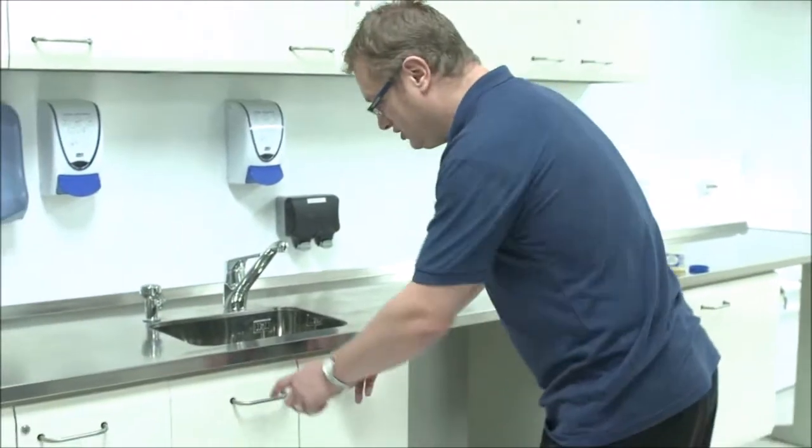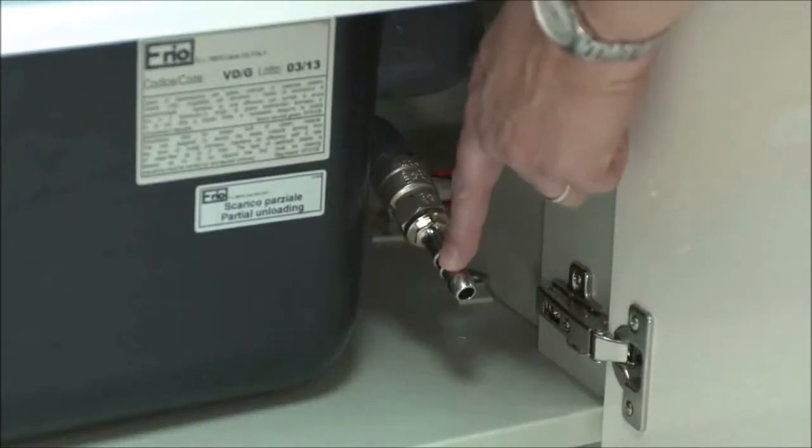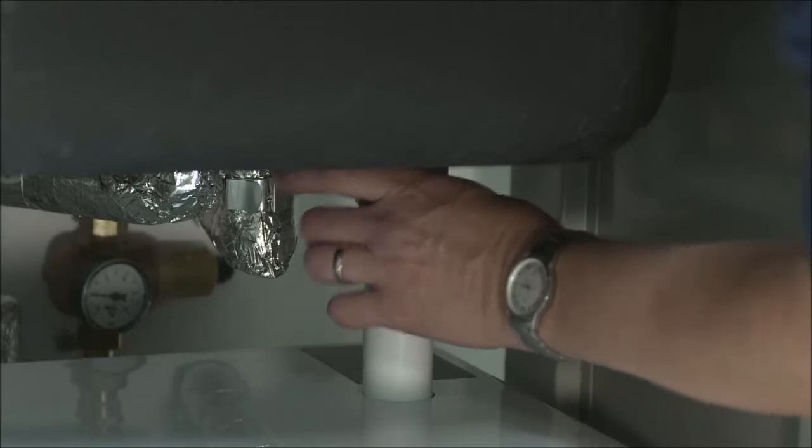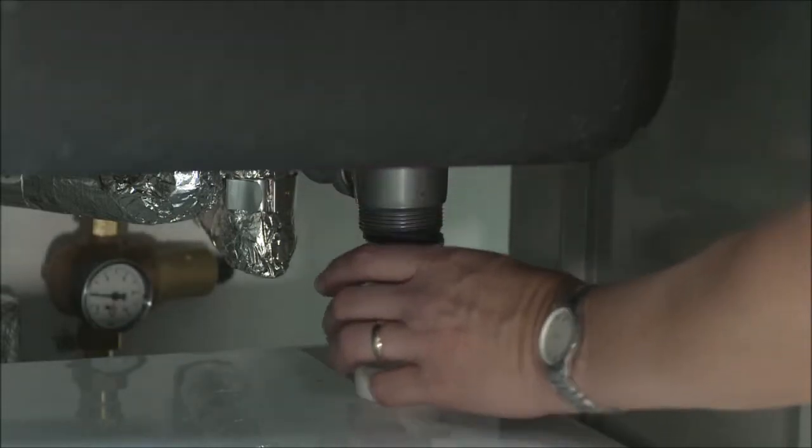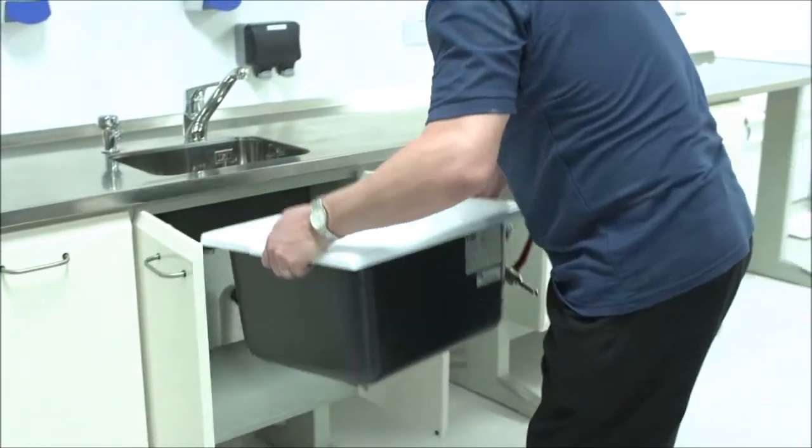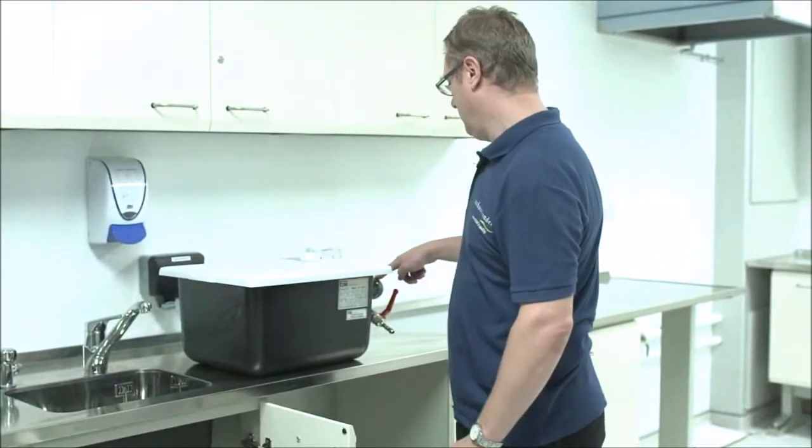To remove the decantation unit, first drain the water using the valve here. Remove the connection here and here. Lift out the decantation unit bearing in mind it will be quite heavy as it's full of plaster and water. Do not carry using the elbow attachment.